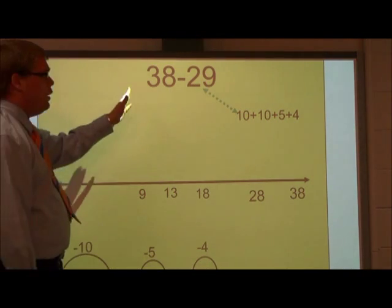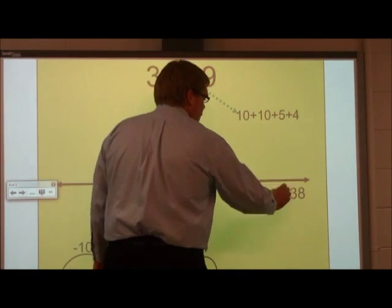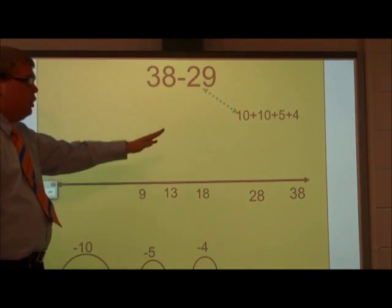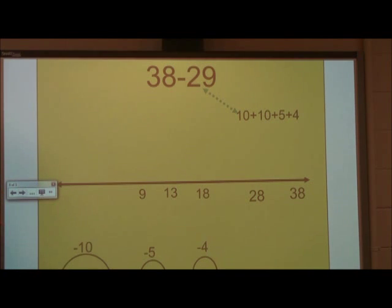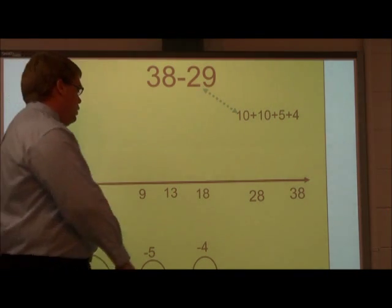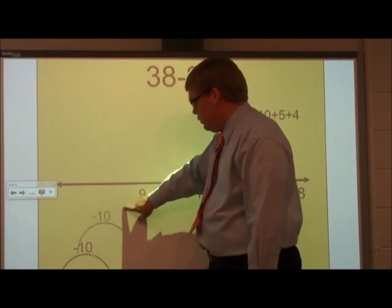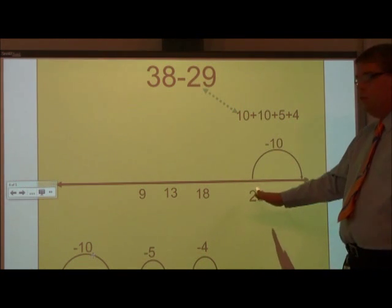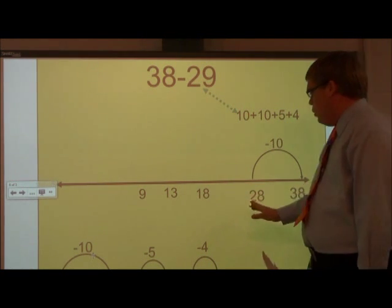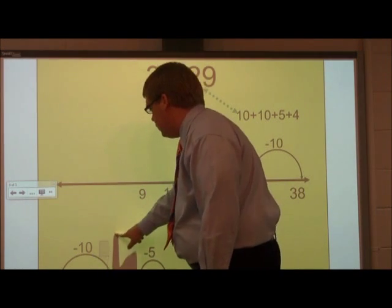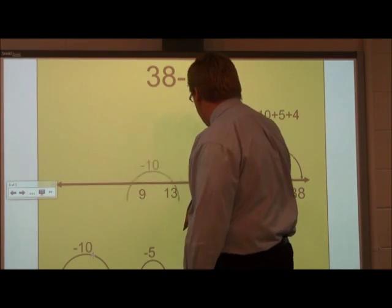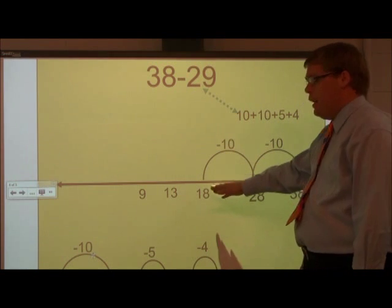We are going to put the bigger number, the minuend, at the end of our number line: 38. And we are going to jump back in groups of tens, fives, and fours. So 38 minus 10, we are going to jump back 10, and we will be at 28. We are going to jump back 10 more from 28, and we will be at 18.